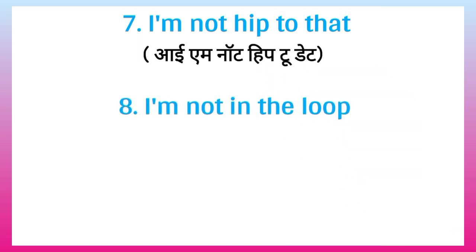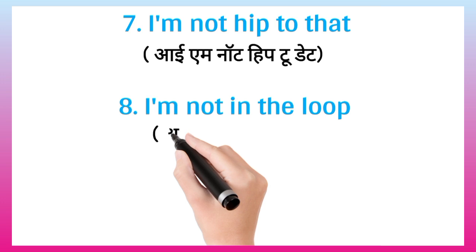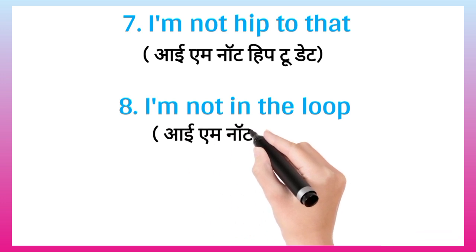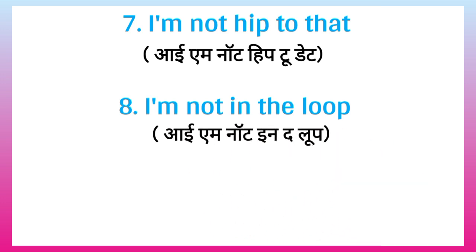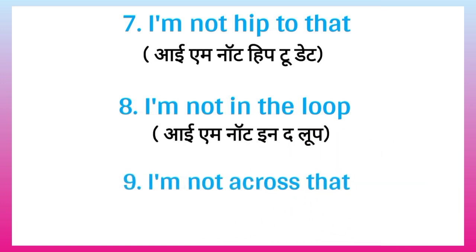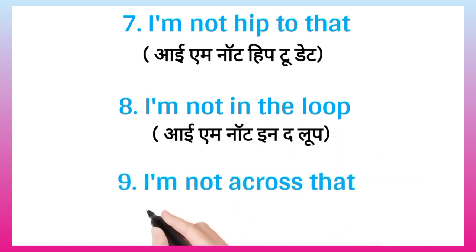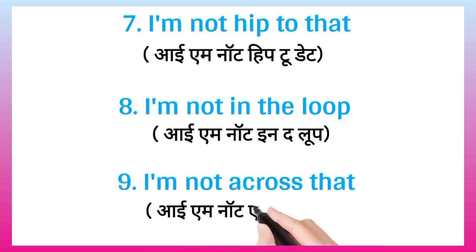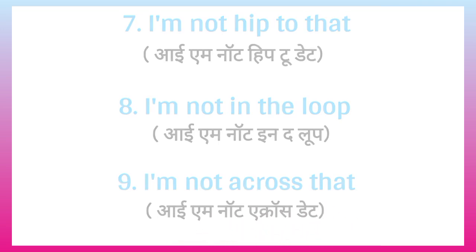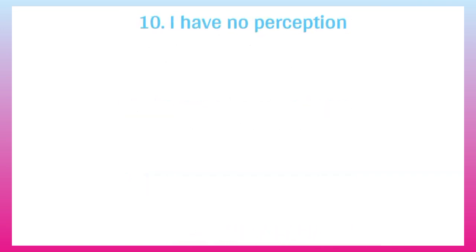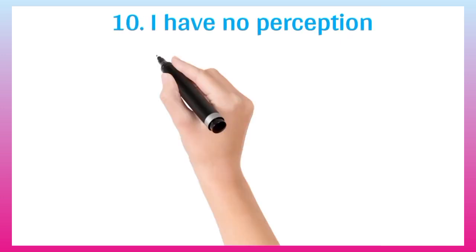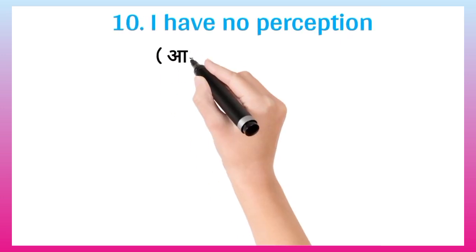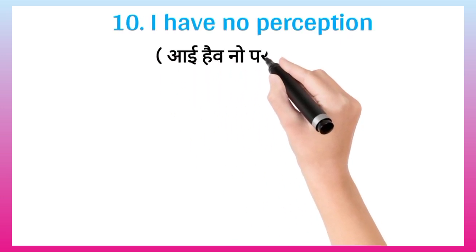Next: I am not in the loop. Next: I am not across that. Next, we have: I have no perception.